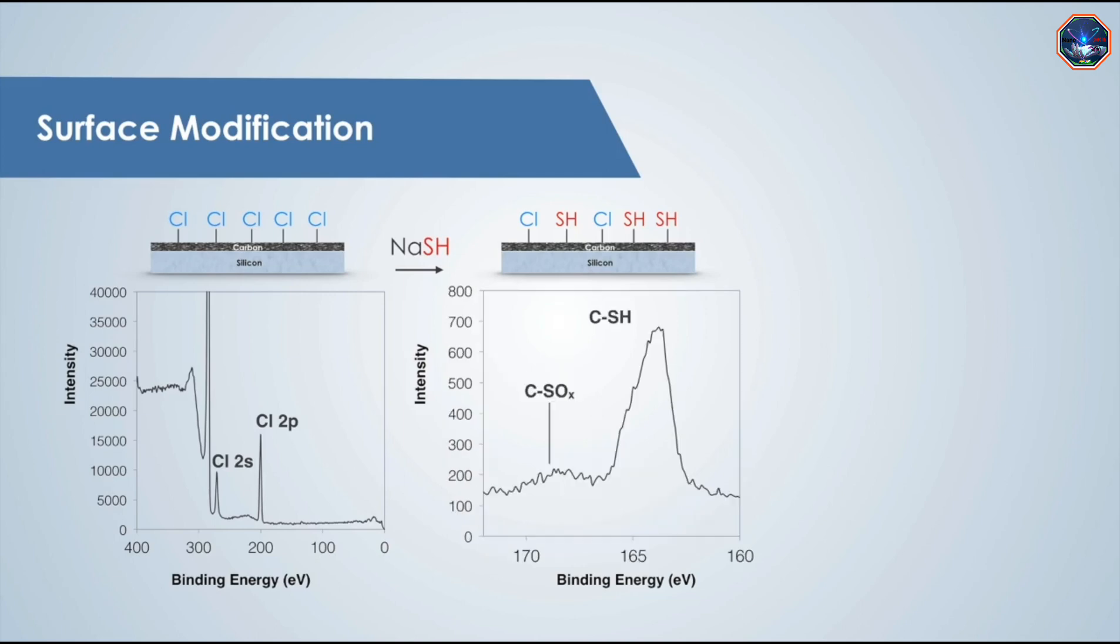We can also take high-resolution scans for the elements of interest in order to understand the surface chemistry even better. If we take a closer look at the sulfur 2p peak, we can see that it is actually composed of two components.